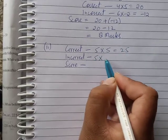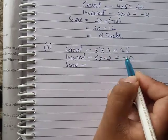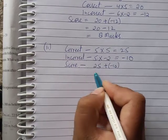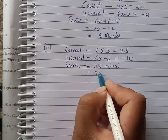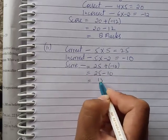Total score is 5 times 5 plus 5 times minus 2, giving 25 plus minus 10, which equals 15 marks.